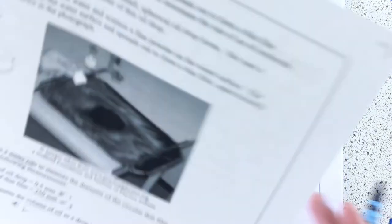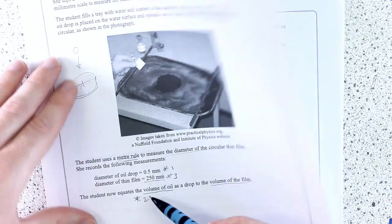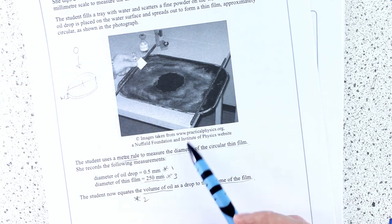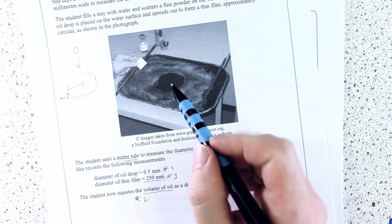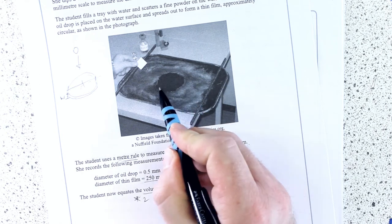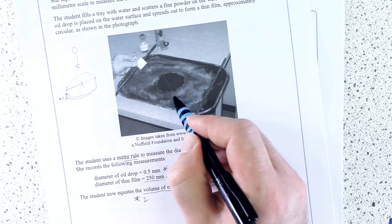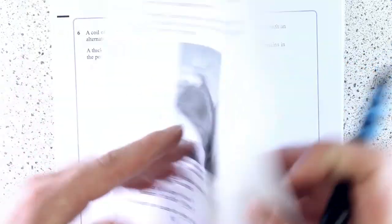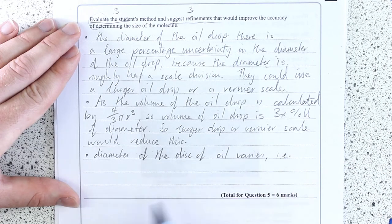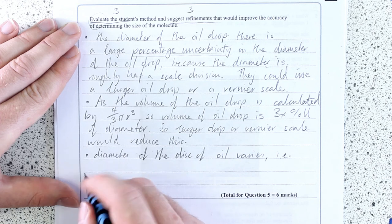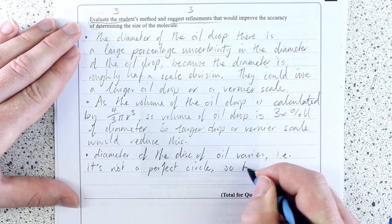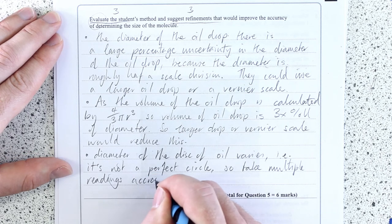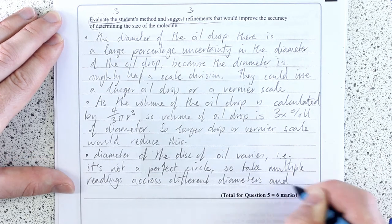It's the same point, I know, but there's a mark for that here. Okay, and then the last one, what about the diameter of the thin film? Well, they haven't told us much detail about how they're going to do that, but how should you do it? Well, because it's not an even diameter all around, it should take several different diameters. Okay, and calculate an average. The diameter of the disc of oil varies. It's not a perfect circle. So, take multiple readings across different diameters and, importantly, calculate an average.